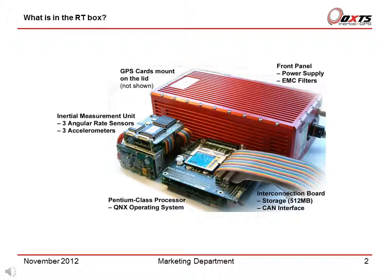Now we should be looking at what is in the RT box. On the left hand side of this picture you will see the inertial measurement unit. The Pentium processor is at the bottom right hand corner. The top board contains the connections to the IMU, the front panel power supply, the Pentium processor, and the two cables to the GPS cards.